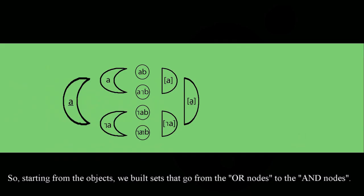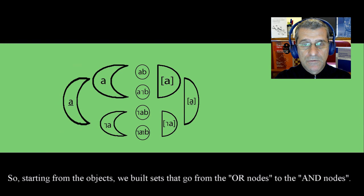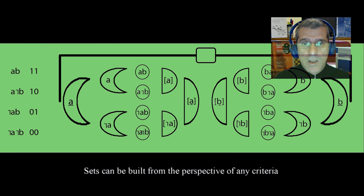So, starting from the objects, we build sets that go from the OR nodes to the AND nodes. Sets can be built from the perspective of any criteria, which does not affect object nodes.